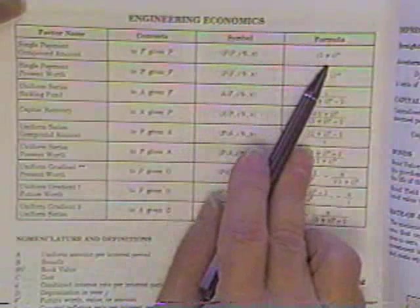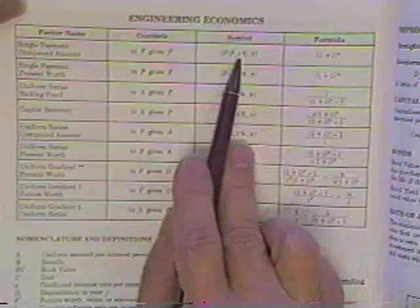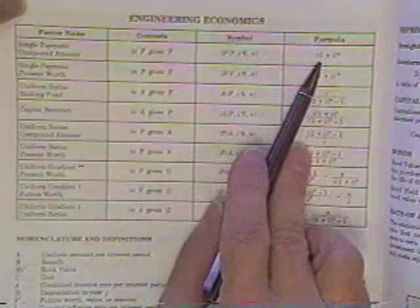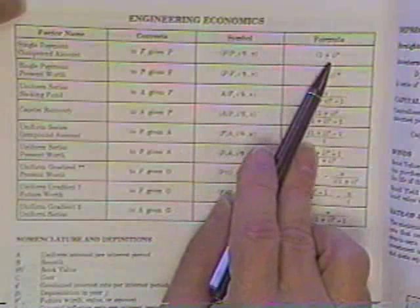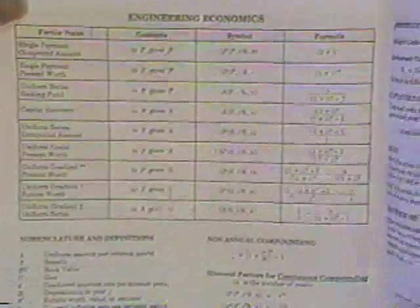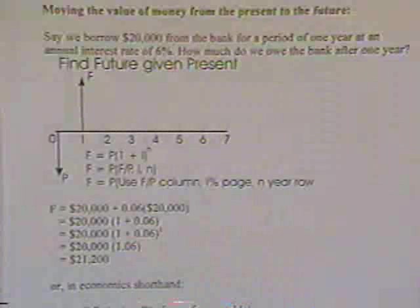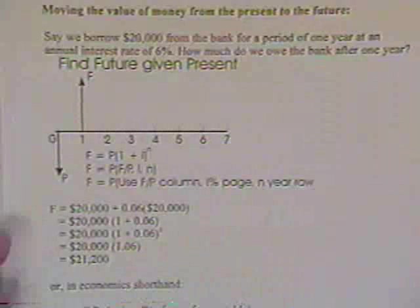Or, you can use the basic formula itself to solve for this number. In this case, it says take one, add the interest rate to it, raise it to the N power, and that would also give you the factor to be multiplied by what you're given to turn it into what you want.